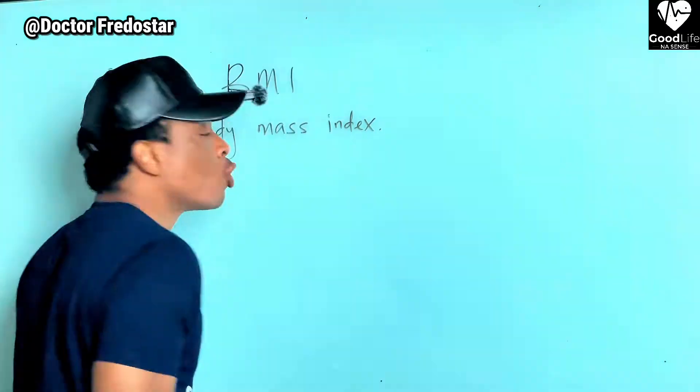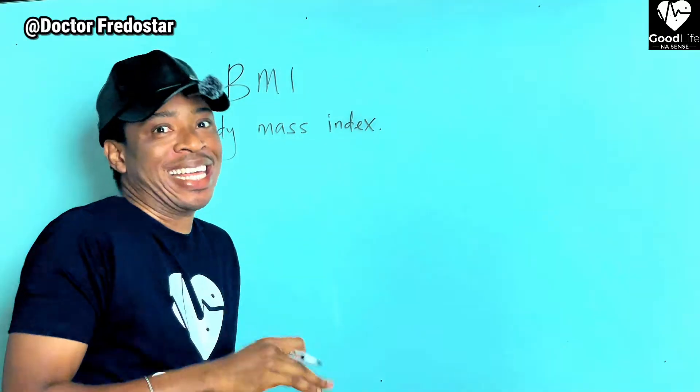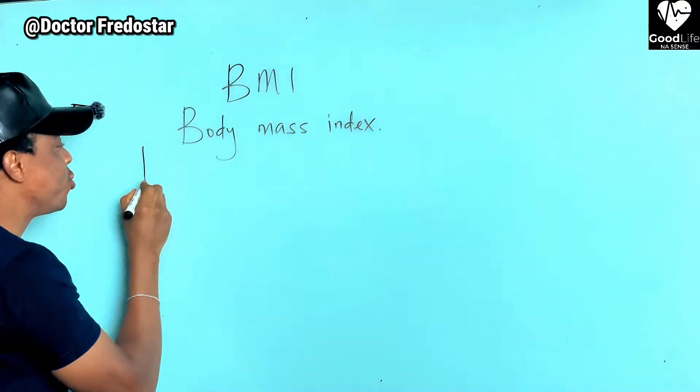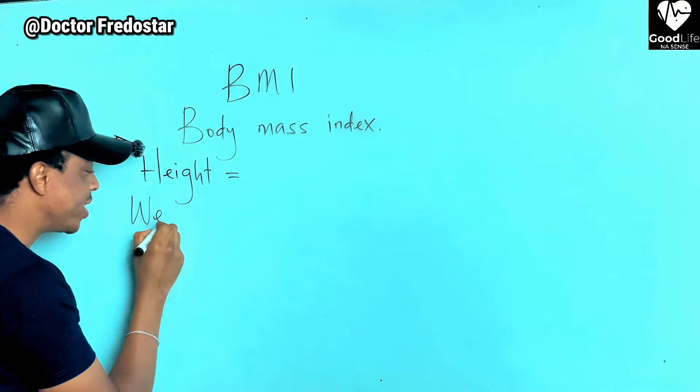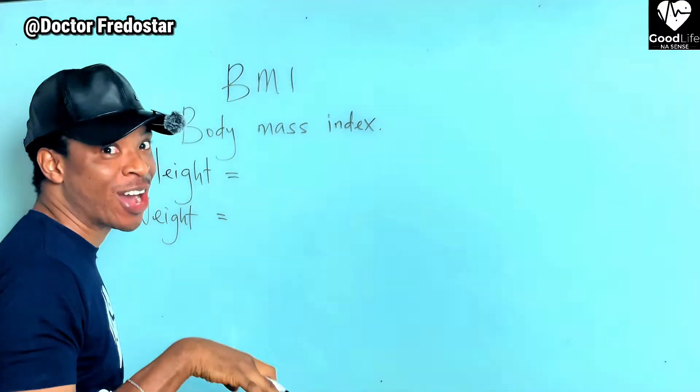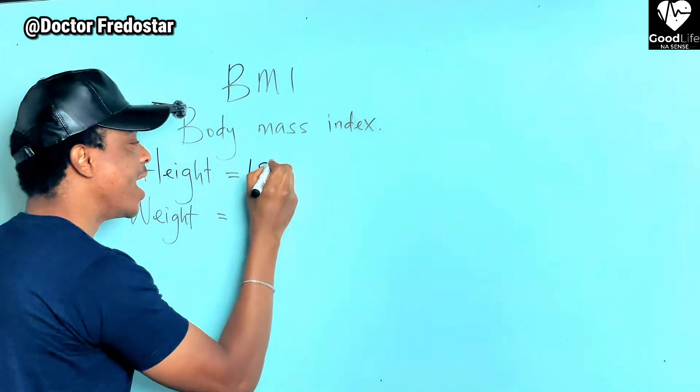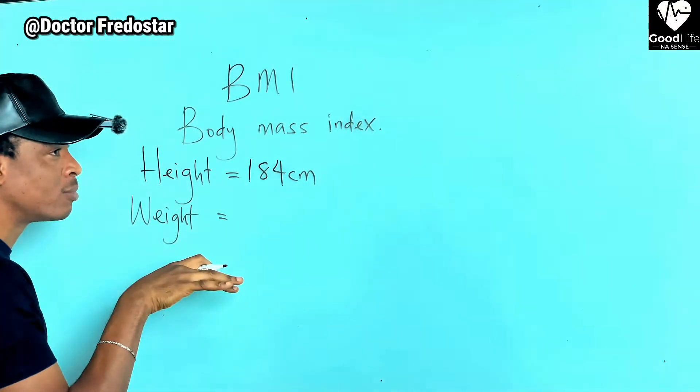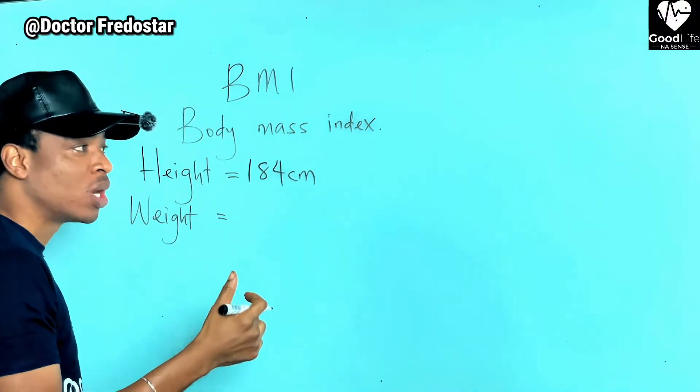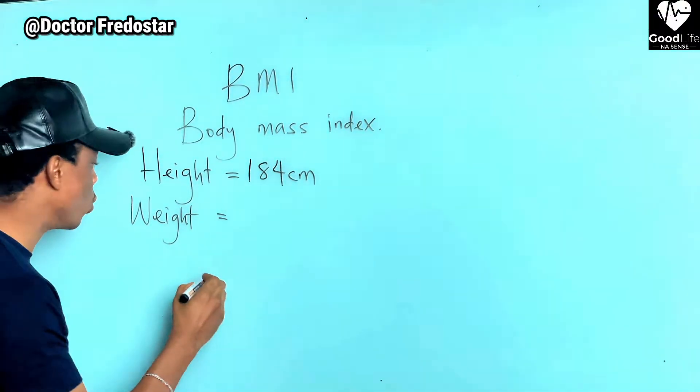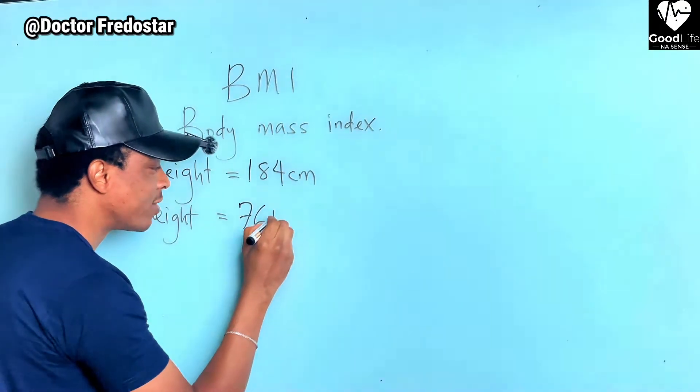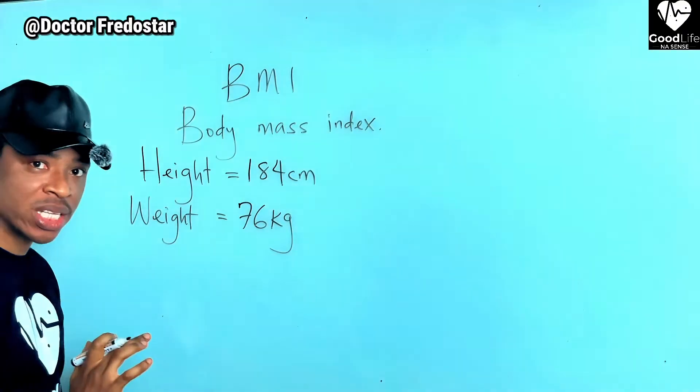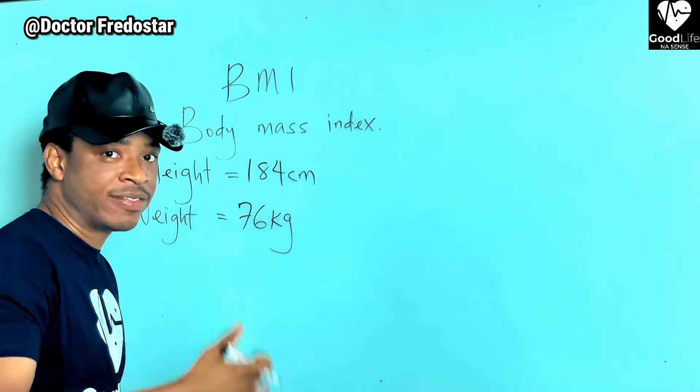So today I will use my own numbers to tell you how to calculate BMI. Now if you want to know your BMI, number one you need to know your height, you need to know your weight. So I checked my own. I checked my own like three days ago. Today is 17th of March 2024, so three days ago I checked my own and my weight was 76 kilograms. So I checked my weight on the 15th of March and this was my weight.